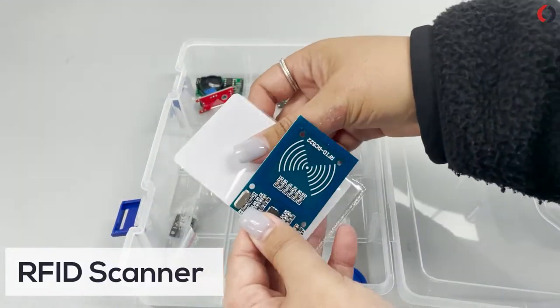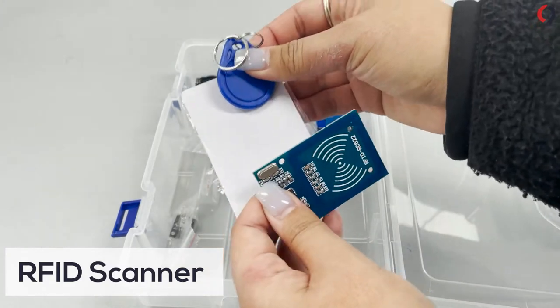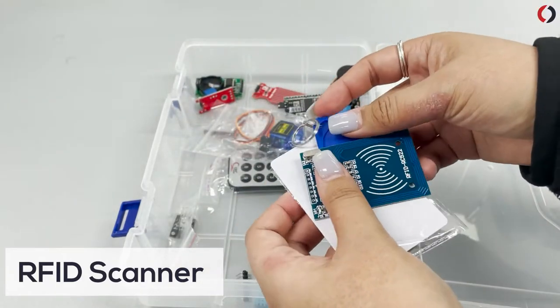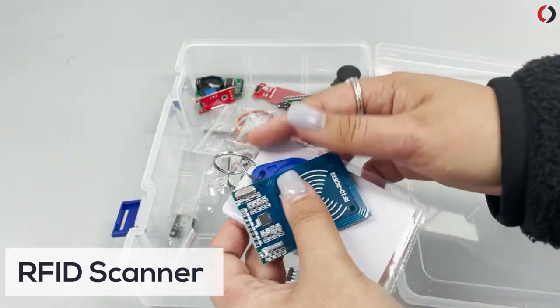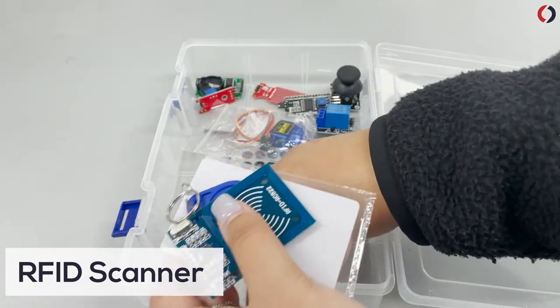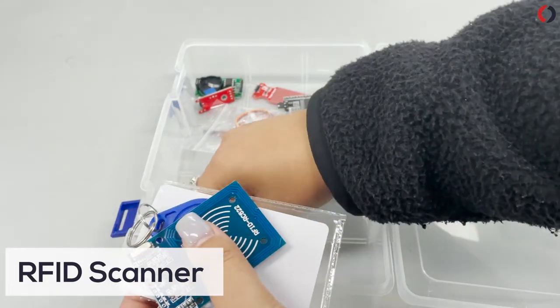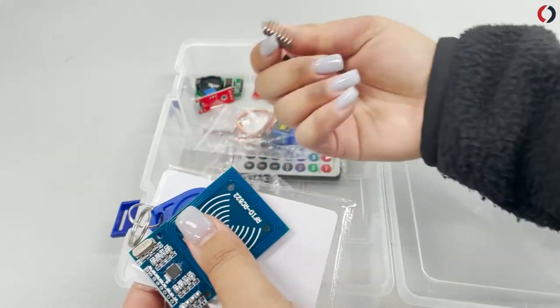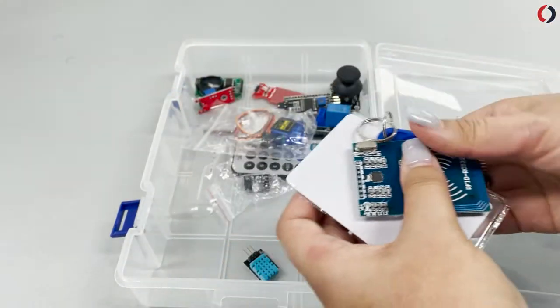This is pretty cool. So this is an RFID scanner and it comes with the card and the scan. So you can program onto your Arduino to use. Also comes with these to actually connect it to the Arduino as well.